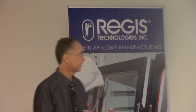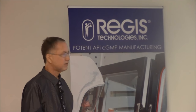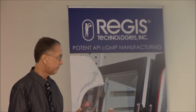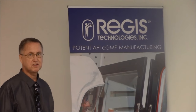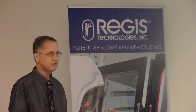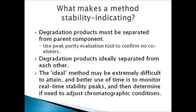What makes a method stability-indicating? Degradation products must be separated from the parent component — a lot like release analysis where impurities must be separated from the parent. Peak purity is an evaluation tool; not only do you want to look at your chromatogram to make sure you don't see peaks co-eluting, but you use peak purity as the devil's advocate approach to make sure you're not missing anything. Degradation products should ideally be separated from each other as well, though that's ideal and sometimes not easy. It is essential to separate the parent from the degradation products. The ideal method might be extremely difficult to attain, and a better use of time would be to look at what happens in real-time stability studies, as emergence of such peaks is usually much slower and you have time to figure out what's going on.